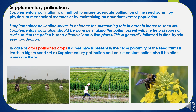Supplementary pollination should be done by shaking the pollen parent with the help of ropes or sticks so that the pollen is shed effectively on the female parent lines. This is generally followed in rice hybrid seed production. In crops like maize and millet, male tapping is done to enhance crossing when there are synchronization issues or pollen is bulky. Keeping beehives in hybrid seed production plots coinciding with flowering is recommended for higher quantity and better quality of hybrid seed in sunflower and rapeseed crops.